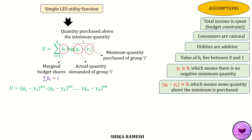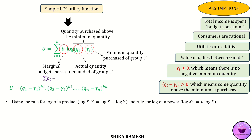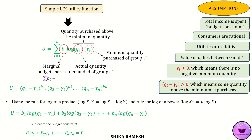The equation can be expanded as U = (q_1 − γ_1)^b_1 · (q_2 − γ_2)^b_2 · ... · (q_n − γ_n)^b_n. Using the rule for the log of a product and the log of a power, this becomes U = b_1·log(q_1 − γ_1) + b_2·log(q_2 − γ_2) + ... + b_n·log(q_n − γ_n), subject to the budget constraint p_1·q_1 + p_2·q_2 + ... + p_n·q_n = Y. Upon derivation using the Lagrangian method, we get the LES demand function as: p_i·q_i = γ_i·p_i + b_i·(Y − Σp_i·γ_i).